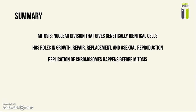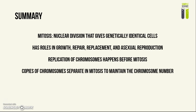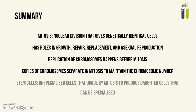The replication of chromosomes actually happens before mitosis in something we call interphase. Then copies of chromosomes will be separated to the two opposite ends of the cell during mitosis, in order for the daughter cells to maintain the original chromosome number of the parent cell.